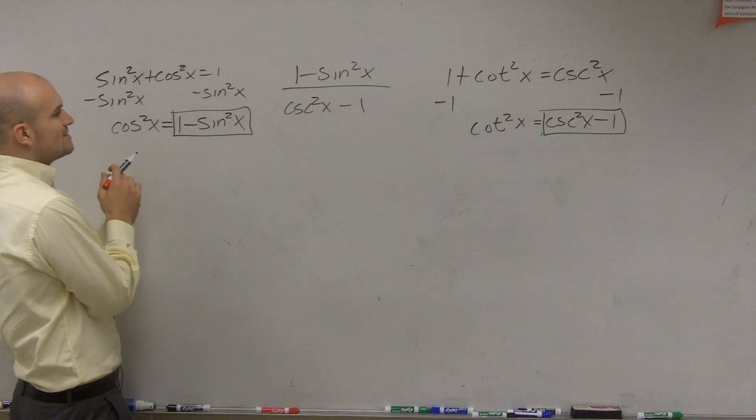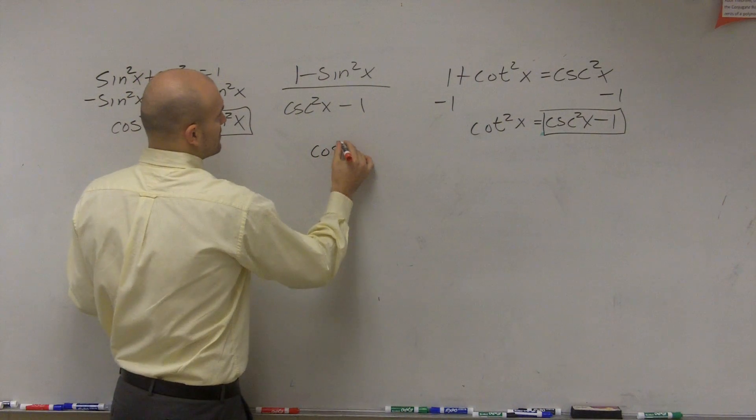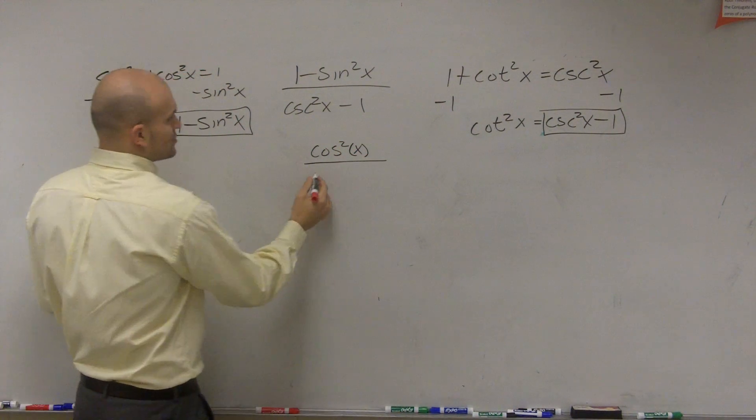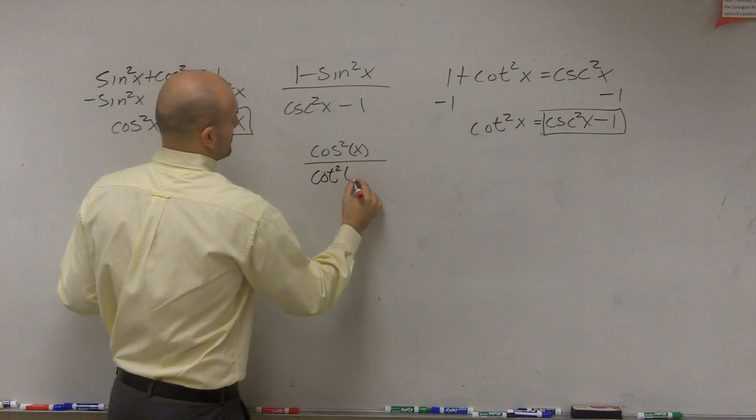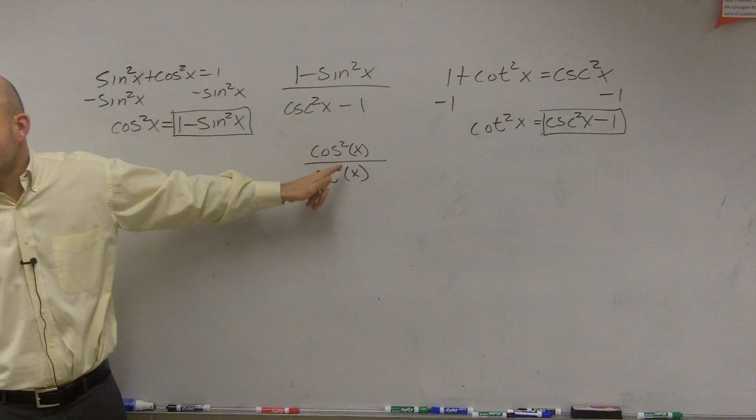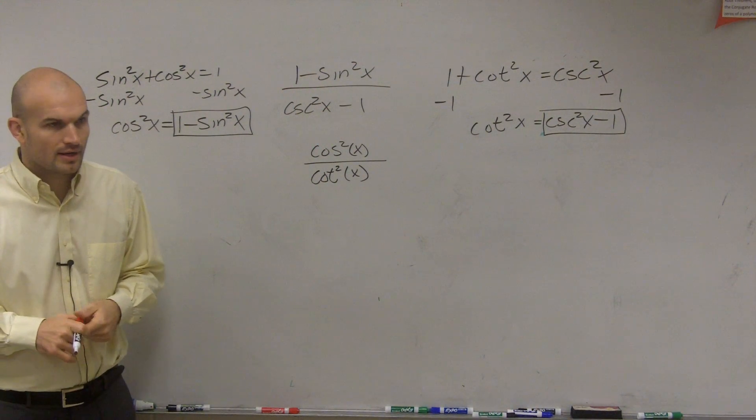Since 1 minus sine squared of x is equal to cosine squared of x, let's put that up there all over the cotangent squared of x. So now this looks pretty simplified. But let's see, can we even simplify it further?